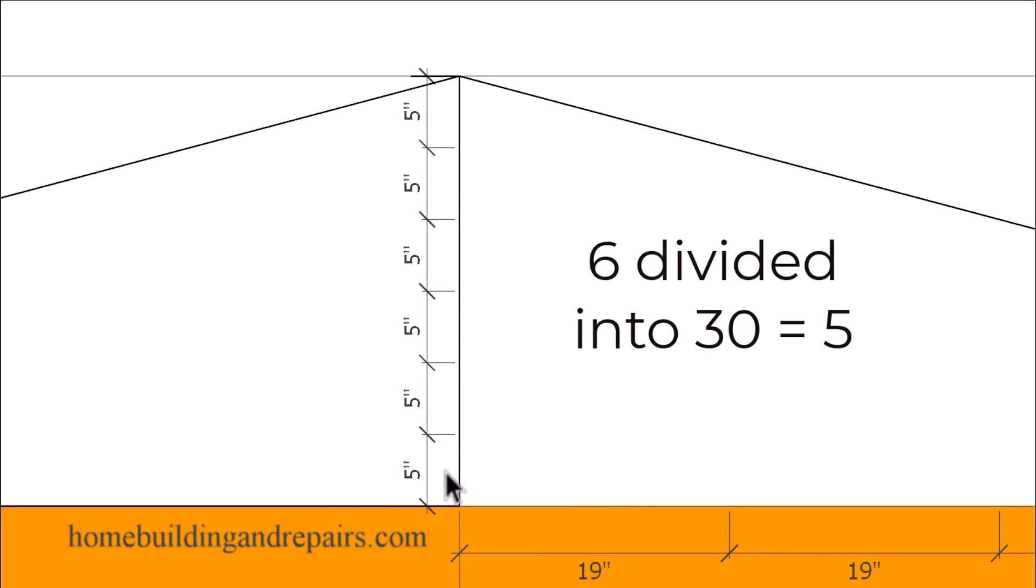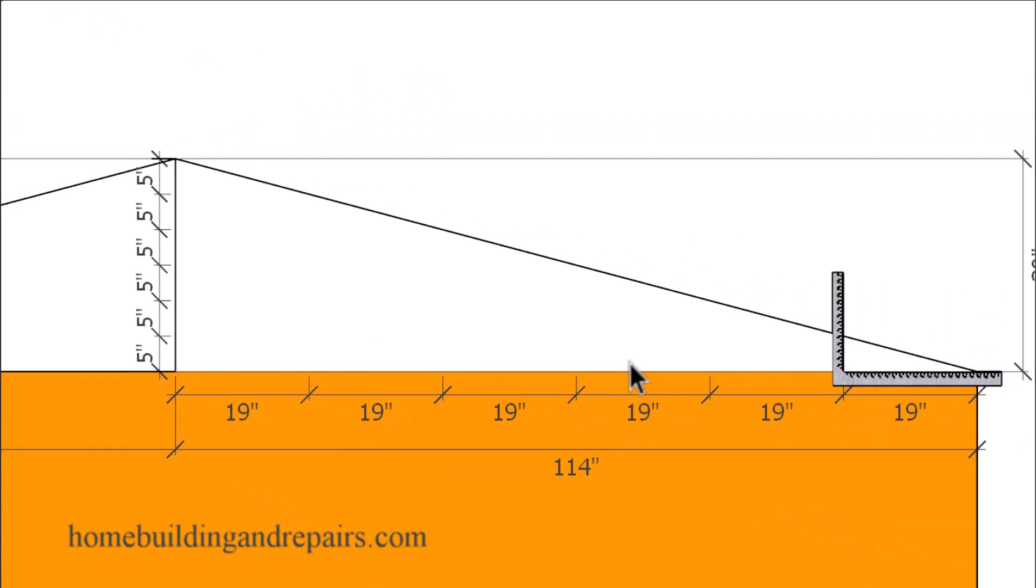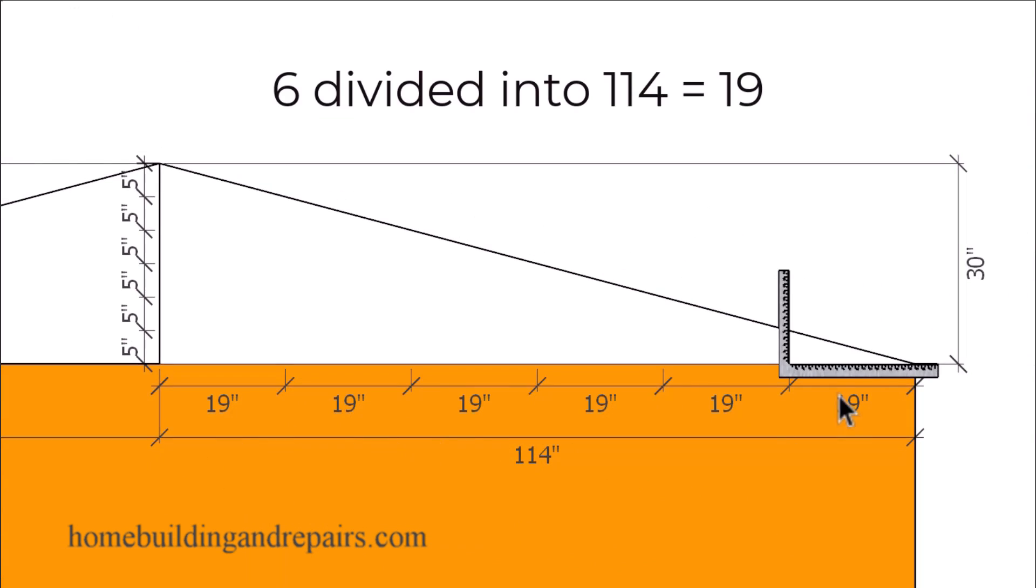Or I can choose to divide it by six, which would give me six five inch increments. And then I'm going to do the same on the bottom for the horizontal measurement. One, two, three, four, five, six. I have a five and 19 ratio for this roof here, instead of using a five and 12 or a six and 12 ratio. And this might be a lot easier for you to use to lay out a roof rafter.